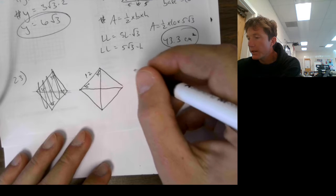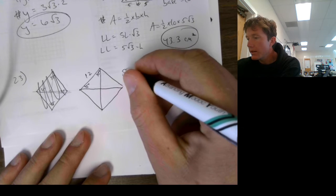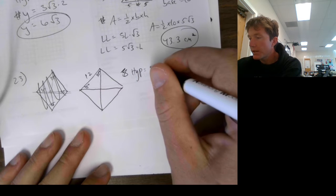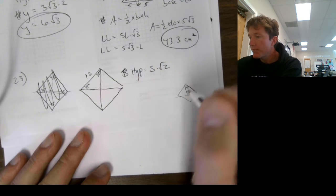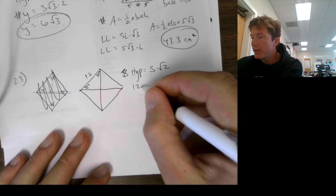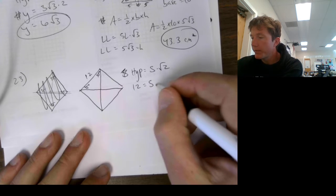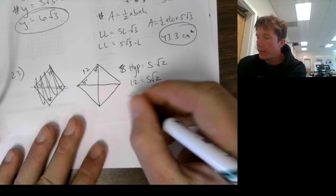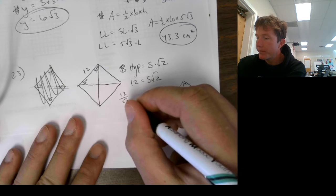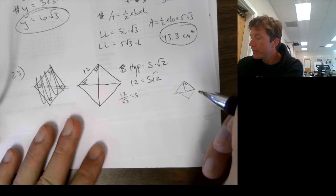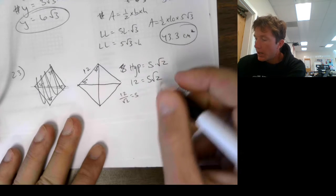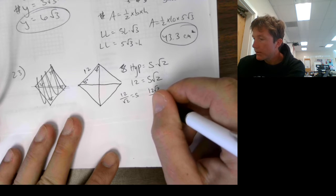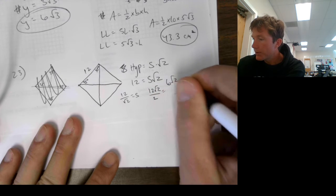The hypotenuse in one of these triangles is equal to the side length times root 2. The hypotenuse is equal to 12. So I need to divide by root 2 to get my side. So my side is going to be equal to 12 root 2 over 2, which equals 6 root 2.